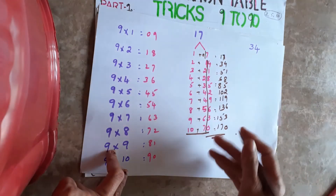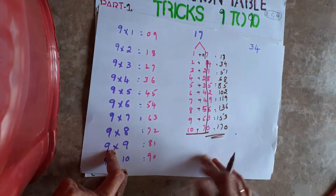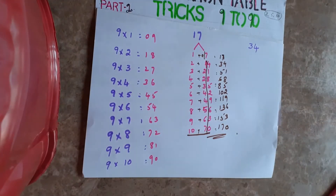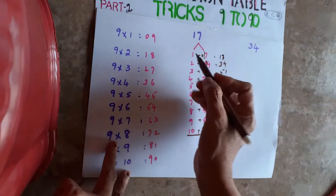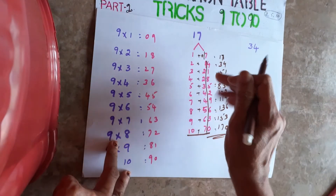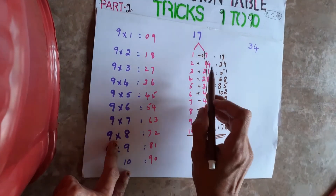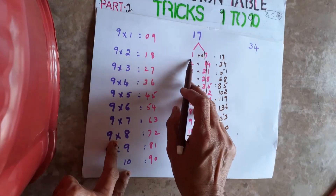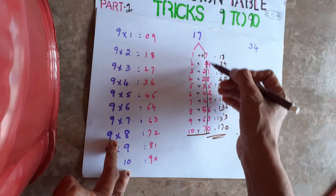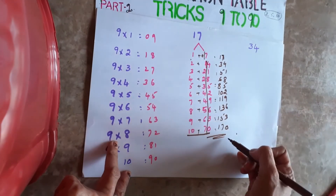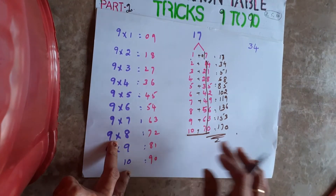I am explaining slowly here, but you can do it very fast. In the tens place, whatever number is there, add it here. And whatever is in the units place, just write it next to that. You will get the answer.